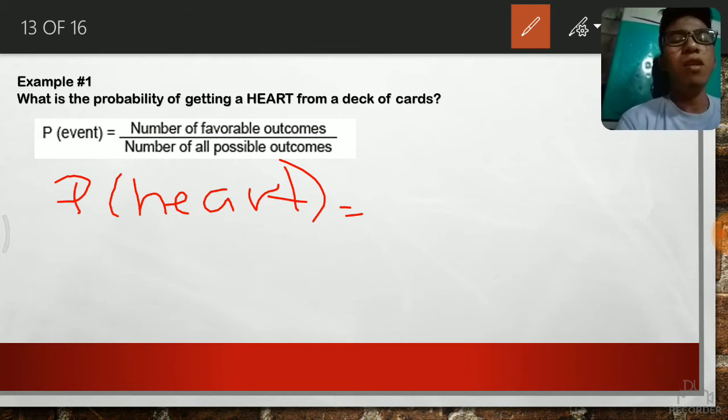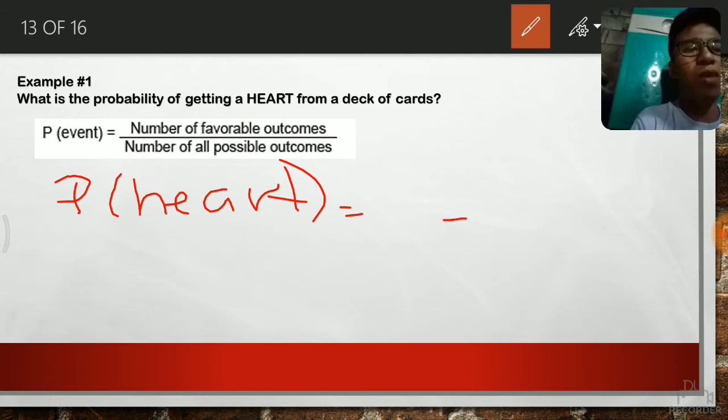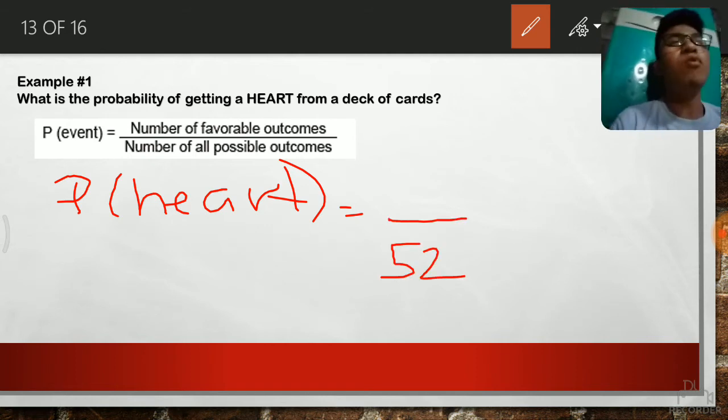Now, that 52 will serve as the number of all possible outcomes. Why? This 52 represents all the possible cards we could draw when we try to draw one card from the deck.